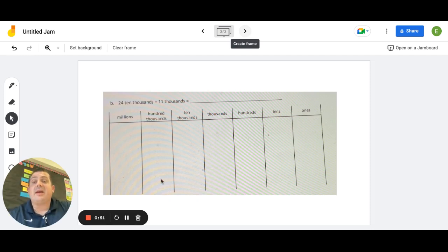This is actually a unit form. When they're telling you how many of a certain place value we have, it's written in unit form. So our goal is going to be, we want to turn this unit form into standard form.